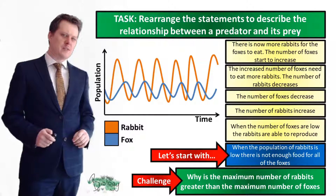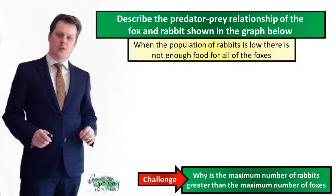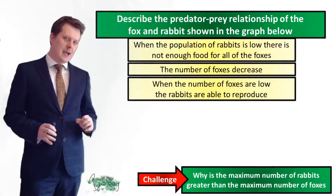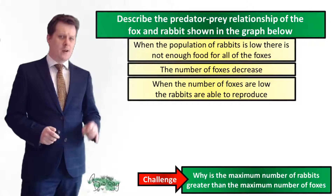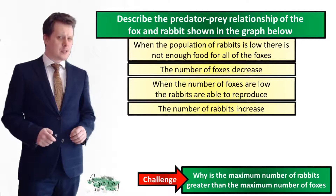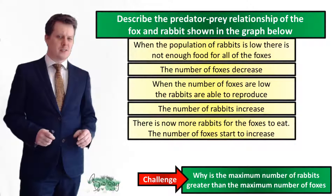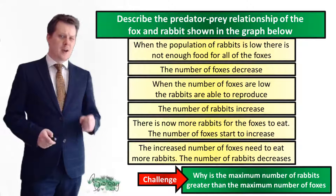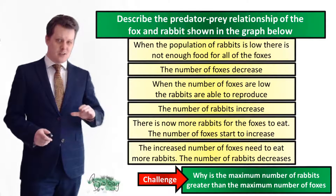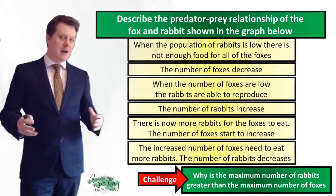We all started with: when the population of rabbits is low, there is not enough food for all of the foxes — this means that the number of foxes is going to decrease. When the number of foxes are low, the rabbits are able to reproduce, so the number of rabbits is going to increase. Which means there are now more rabbits for the foxes to eat, and the number of foxes is going to start to increase. The increased number of foxes need to eat more rabbits, and so the number of rabbits starts to decrease. This then returns to the beginning and the cycle repeats.